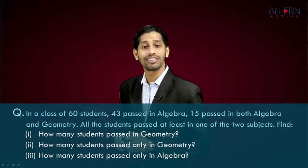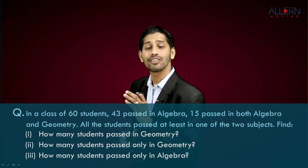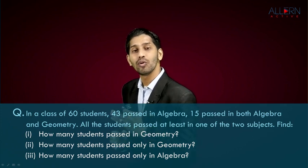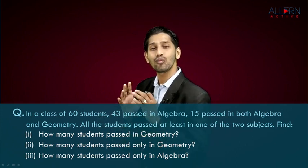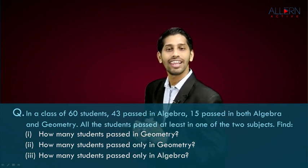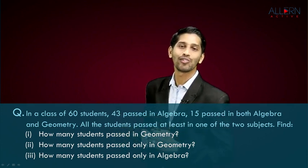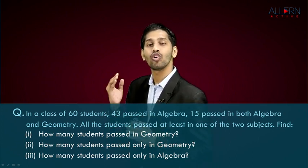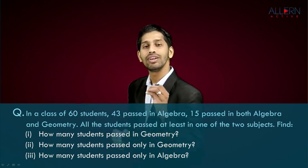Let's take a very important question based on a word problem. The question says that in a class of 60 students, 43 passed in algebra, 15 passed in both algebra and geometry, and all the students passed in at least one of the two subjects. We need to find how many students passed in geometry, how many passed only in geometry, and how many passed only in algebra. We can solve this by Venn diagram or by formula — let's solve it with the formula.